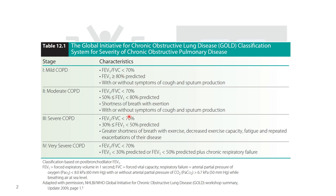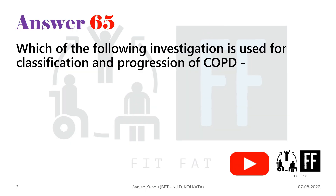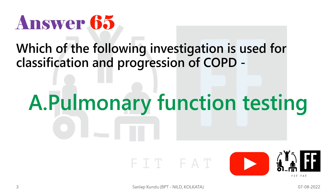In each of these stages, we basically see the FEV1 value, the FEV1/FVC value, and other such things. The main parameters are FEV1 and FVC values. To get these values, the test we need to do is the lung function test. You can refer to the Physical Rehabilitation Sullivan book. The answer is option A, that is pulmonary function testing.